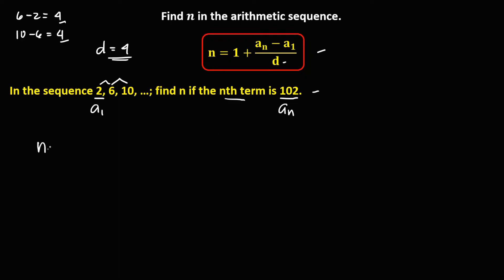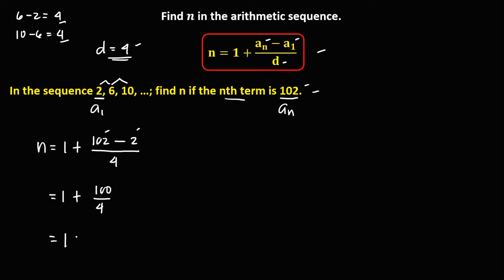To solve now for n using this formula: n equals 1 plus a sub n — and a sub n is 102 — minus a sub 1, that's positive 2, then over the common difference, that's positive 4. Simplifying, we have 1 plus (102 minus 2), which is 100, over 4. That gives 1 plus 25, so therefore n is equal to 1 plus 25, that's 26.